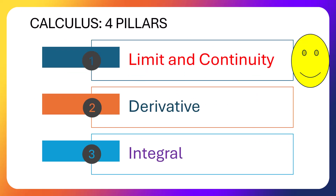Now, in calculus there are four major pillars: limit, continuity, derivative, and integral. Limit and continuity describe the behavior of a function. The approach of the infinitesimal in the 19th century introduced the concept of taking a value approaching a point. In mathematics, the epsilon-delta definition has been linked to the formal definition of a limit.